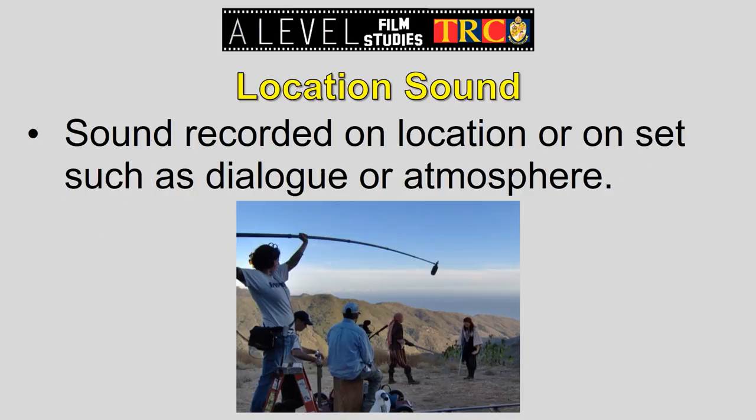We've got location sounds — those are sounds recorded on location or on set, usually the dialogue and maybe some atmosphere. Atmosphere is background noise that's there to create a sense of place. As you can see here, we've got a boom operator with a boom microphone used to record the dialogue from the actors. It'll only pick up exactly what's in front of it, so it'll only pick up the dialogue — not any background sounds. Those have to be recorded separately.